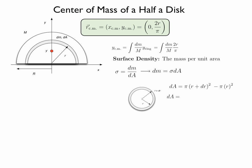Opening the parenthesis, the terms become pi r squared plus 2 pi r dr plus pi dr squared minus pi r squared.